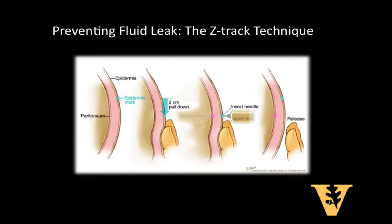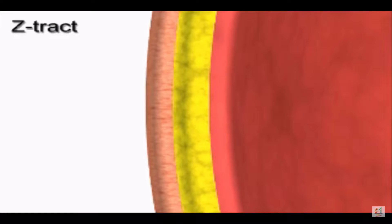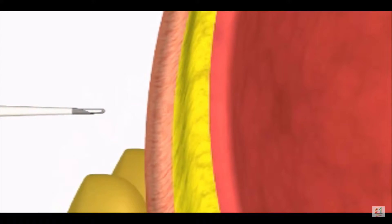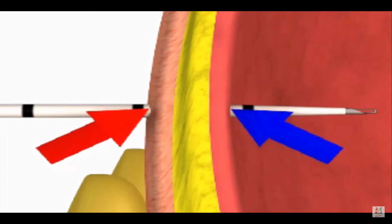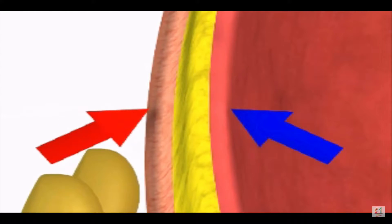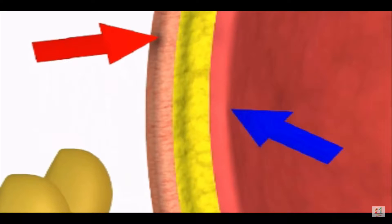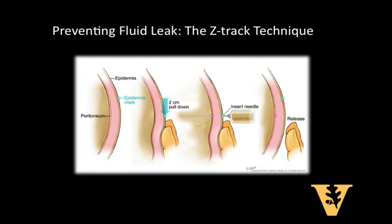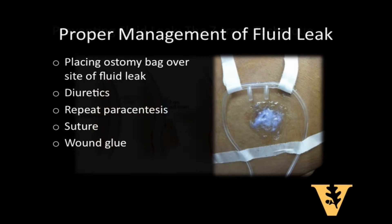To help prevent these leaks, the z-track technique should be used when placing your large paracentesis needle into the peritoneal cavity. To do this, you first retract down on the superficial skin layer before piercing that initial layer of skin with your needle. The cutaneous tissue is pulled a centimeter or two caudad prior to needle insertion and advancement through the peritoneum. When the catheter is withdrawn at the end of the procedure, the cutaneous entry site retracts to its original position, acting as a self-sealing skin patch over the puncture site, which can help reduce the incidence of ascitic fluid leakage.